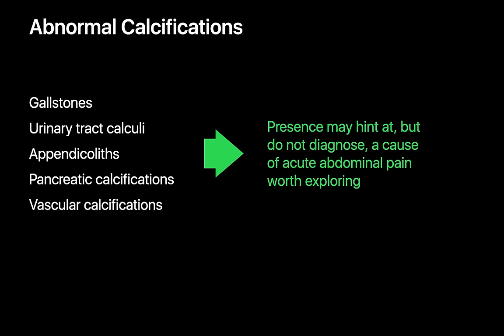Now let's review the top abnormal calcifications to be on the lookout for when interpreting an abdominal x-ray for acute abdominal pain. Objects like gallstones, urinary tract calculi, appendicoliths, pancreatic calcifications, and vascular calcifications are important to look for. They can sometimes hint at the cause of a patient's acute abdominal pain, though they can also end up being unrelated. When we spot them and haven't established an explanation for acute abdominal pain yet, their presence should prompt more investigation — often with a more diagnostic modality like ultrasound or CT.